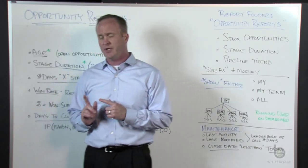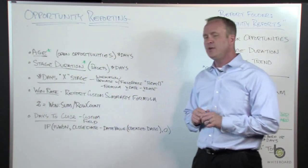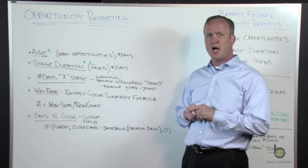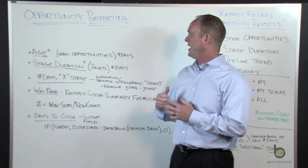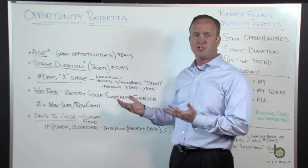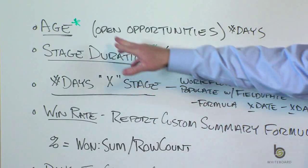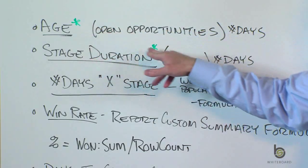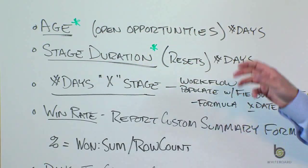I'm going to talk about a couple of fields that are available on opportunity reports that are not on the page layout — these are just available on reporting. That's why I've got these green asterisks. These two are available on opportunity reports.